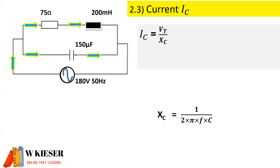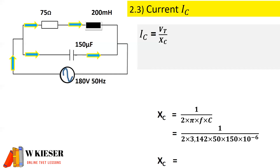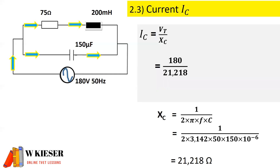In part 3 of question 2 we need to determine the current flowing through the capacitive branch, so it's V total divided by the capacitive reactance. To calculate the capacitive reactance it's 1 over 2π times F — frequency of 50 hertz. To convert 150 microfarad into farad we multiply by 10 to the minus 6. Therefore the capacitive reactance is 21.218 ohms, and the current flowing through the capacitor is 8.483 amps.